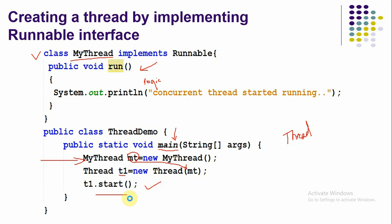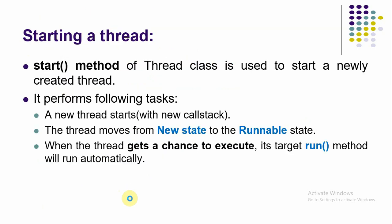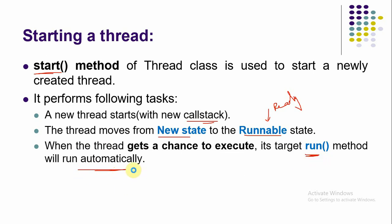The start() method is used to make a thread runnable — ready to run — and it waits for the CPU to give it a chance. Once it gets a chance, it will be executed. The start() method creates a new thread, starts it in the call stack, and moves it from the new state to the runnable state. When the thread gets a chance to execute, it calls the run method automatically — you do not need to call run manually.